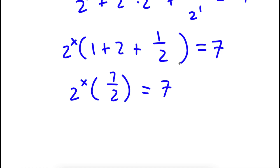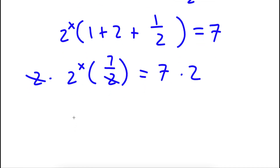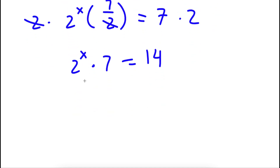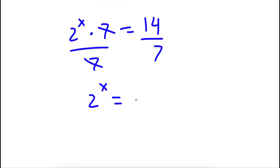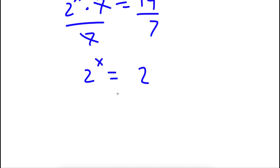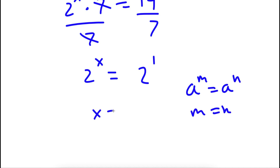Now if I multiply both sides by 2, these cancel out and I'm left with 2 to the power of x times 7 is equal to 14. If I divide both sides by 7, these cancel out and I'm left with 2 to the power of x is equal to 2. And 2 is the same thing as 2 to the power of 1. Since the bases are equal, x is equal to 1.